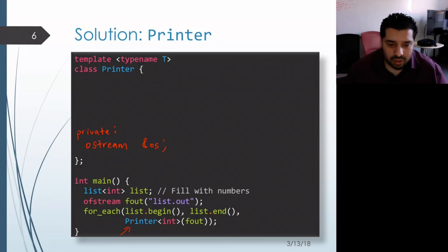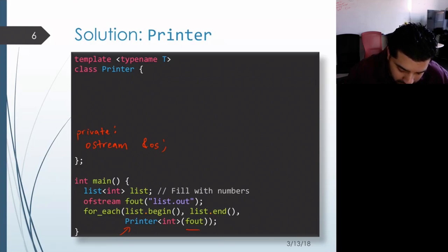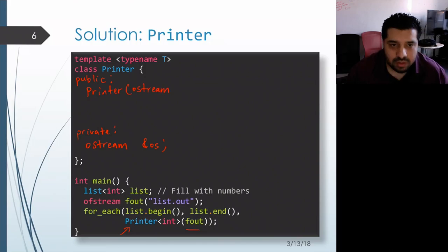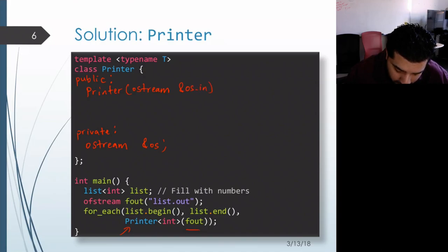Now we also need a constructor because we're going to be passing in the desired output stream as an argument to that constructor, and then the constructor will need to initialize this reference to be referring to that output stream. So in the public section, we'll write a constructor. It's going to take in an output stream, and again, it needs to do that by reference so we don't make a copy, because we're not allowed to copy output streams. And then in the member initializer list, it will initialize the OS reference, the member variable, using the object that was passed in.